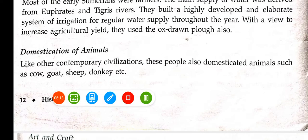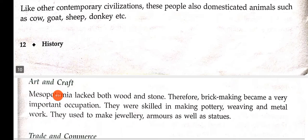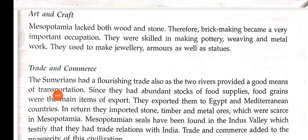Domestication of animals — yahan par bhi animals ko domesticate kiya jata tha. Ox jalaate the, hal jante the. Domesticate karna matlab apne saath rakh lena. Cow, goat, sheep, donkey — in sab ko ye log apne ghar ke paas rakhte the.